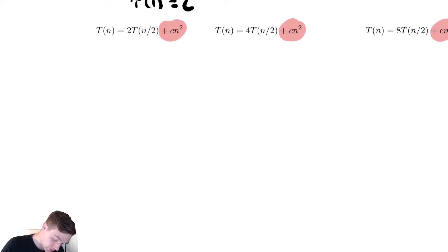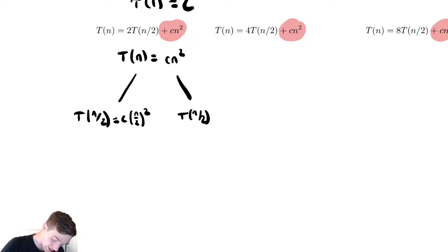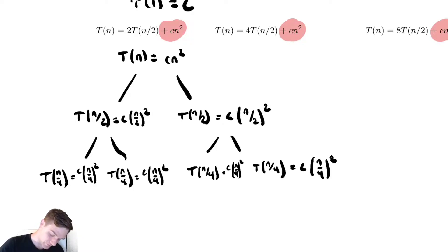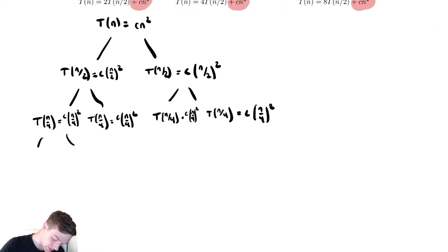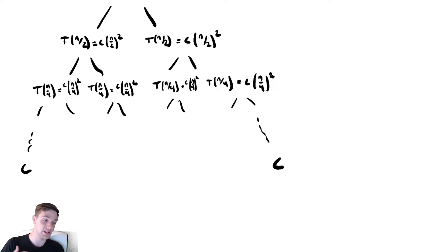For the first example, T(n) gives us cn squared of work. It splits into two branches that are T(n/2) and T(n/2). Plugging n over 2 into the additional work, we have cn/2 squared and cn/2 squared. Both of those create two new processes that are half as big — T(n/4) — and each of those has cn/4 squared of work. This repeats until we eventually terminate. All the recursive calls are the same size, so the height of the tree and the path to the nearest leaf from the root are going to be the same.